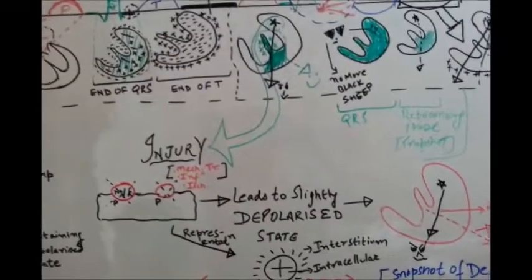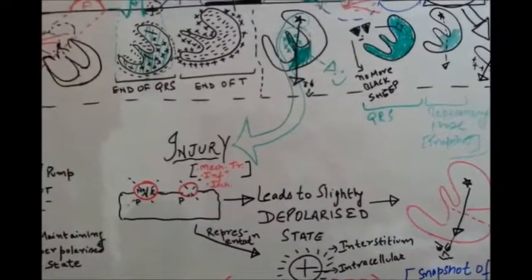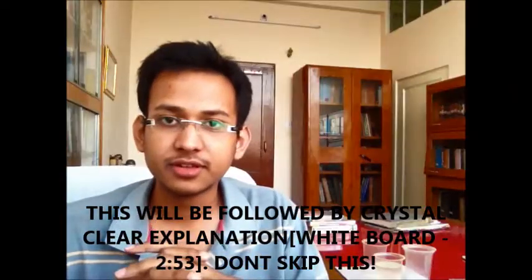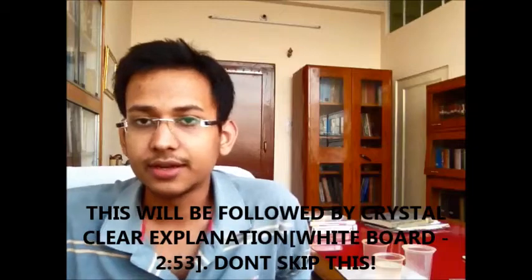For understanding ST variation and current of injury, I would like to give you a very good conceptual example so that it may get more clear. Hi friends, I'll be studying about J point on the ECG. Our second topic is current of injury, also called injury potential. Before going on to the whiteboard, I would like to give you a brief conceptual example that will help us understand what is current of injury and how it is traced on ECG.